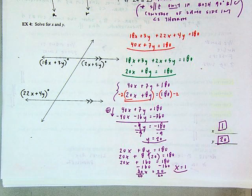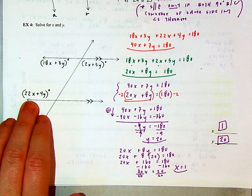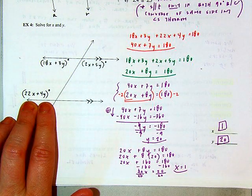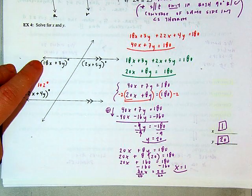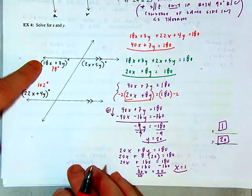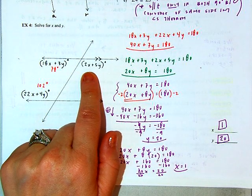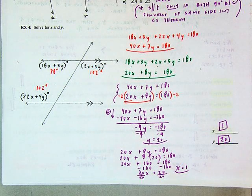I've solved for X and Y, but I want to plug back in to make sure I didn't make a mistake. If I plug in 1 for X: 22 times 1 is 22, 4 times 20 is 80, so 22 + 80 = 102 degrees. Checking up here: 18 times 1 is 18, plus 3 times 20 is 60, giving 78 — which is the supplement. Over here: 2 times 1 is 2, 5 times 20 is 100, giving 102 again. There are always ways to double-check to make sure your math is solid and you didn't make a simple mistake. Have a good rest of your day.